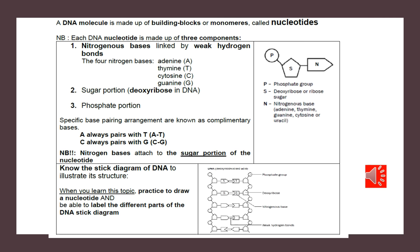The monomers of DNA are called nucleotides. Each nucleotide consists of three parts: a nitrogenous base (there are four types — adenine, thymine, guanine and cytosine), a sugar (deoxyribose in the case of DNA), and a phosphate portion. Nitrogenous bases are linked by weak hydrogen bonds. Base pairing occurs as follows: adenine links with thymine, and guanine links with cytosine — this is known as complementary base pairing. A nitrogenous base always attaches to the sugar part of the nucleotide.